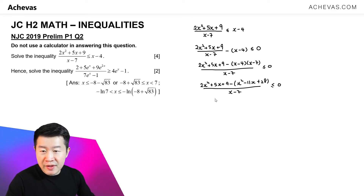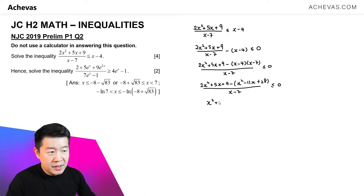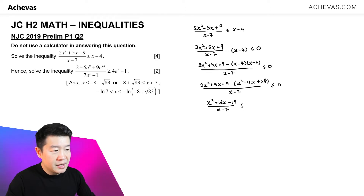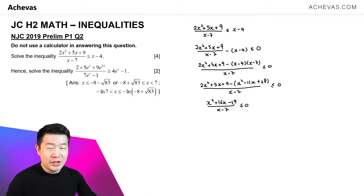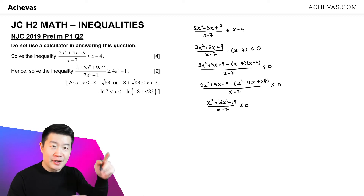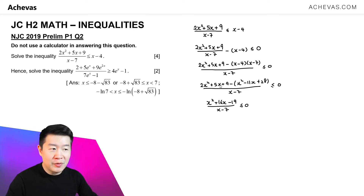Simplifying this, we get x squared plus 16x minus 19, divided by x minus 7, less than or equal to 0. For the numerator, it is not easy to factorize directly, so we will need to make use of other means instead of the cross method that we are more familiar with from secondary school.